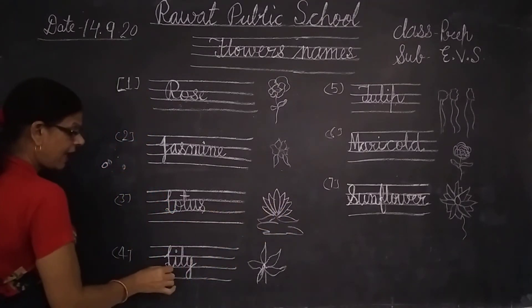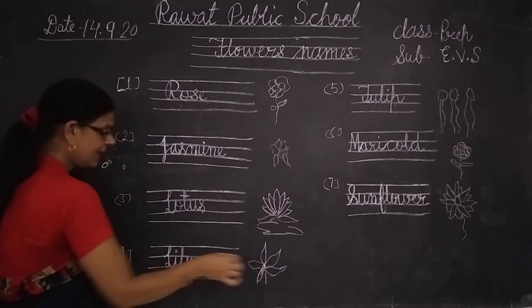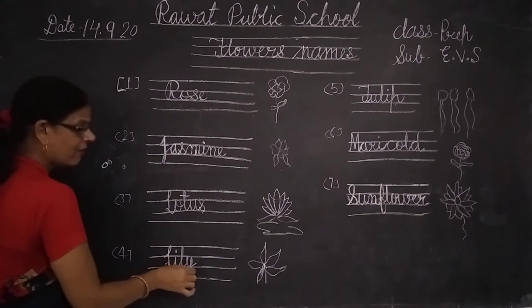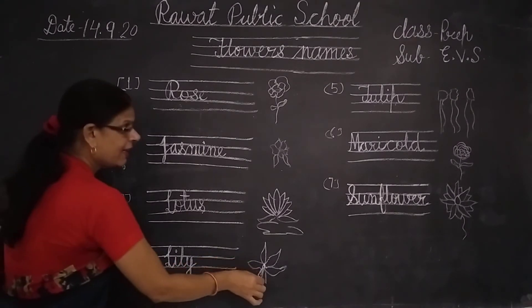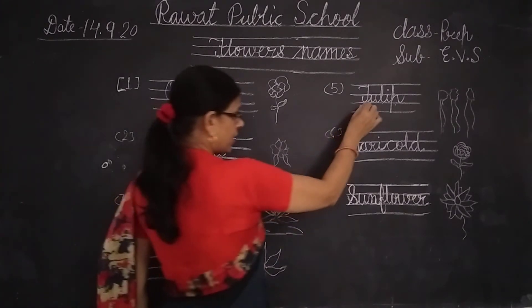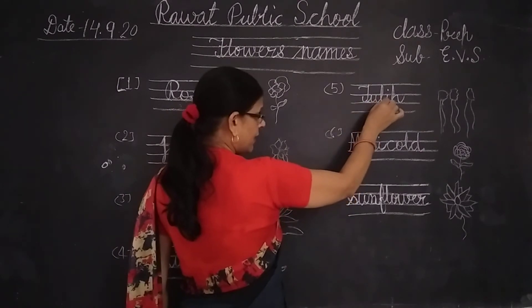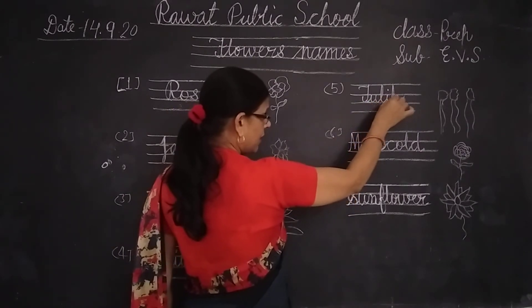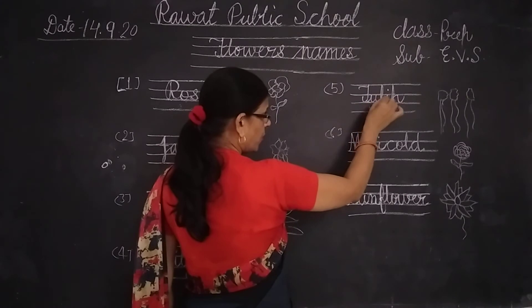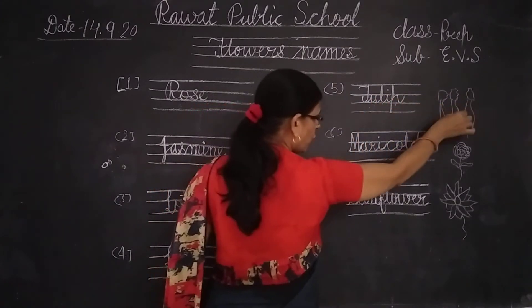Next: L-I-L-Y. Lily. L-I-L-Y. Lily. Now next is T-U-L-I-P. Tulip. T-U-L-I-P. Tulip.